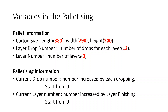There are also two more variables: current drop number and current layer number. You pick up one carton and drop it, then add one — two, three, four, and so on. When the current drop number reaches 12, you increase the layer number and reset the current drop number back to zero. Then count up again to 12, increase the layer number again, and reset. This is how the numbers work in the program.